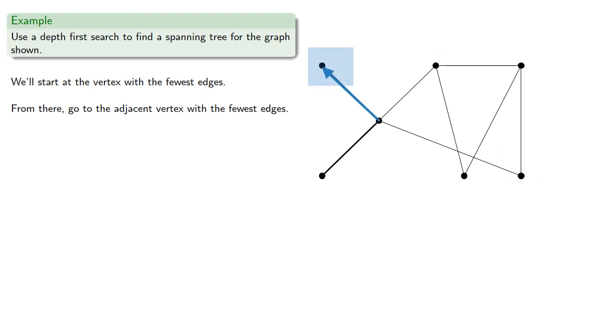And at this point, we can't go any further. So in a depth first search, if there are no adjacent vertices unvisited, go back a step and choose another vertex.